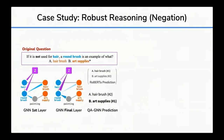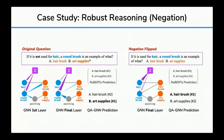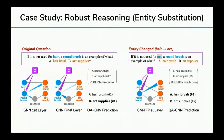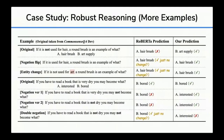We also find that QAGNN can handle some robust reasoning such as negation and entity substitutions. For example, given the question 'if it is not used for hair, a round brush is an example of what?', because of the negation, the correct answer is 'art supply' rather than 'hairbrush'. In the original negated question, the model attends to the correct answer. When we flip the negation, the model predicts 'hairbrush' correctly. When we change the entity from 'hair' to 'art', the model adapts the answer accordingly to 'hairbrush'. We find that language models like RoBERTa fail in those tests, but QAGNN handles some of them correctly.